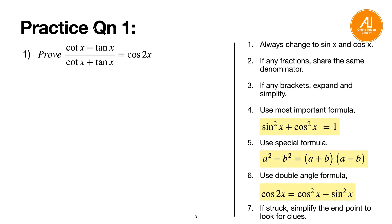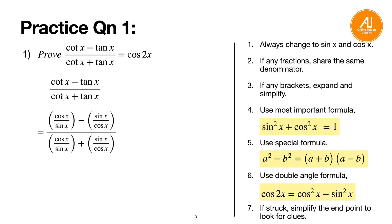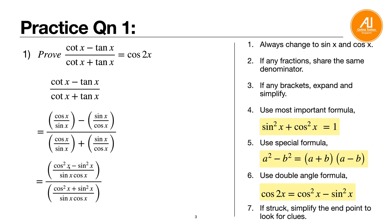Question one: prove (cotangent x minus tangent x) over (cotangent x plus tangent x) equals cosine 2x. Copy the left-hand side. First rule: change everything to sine and cosine. Cotangent is cosine over sine, tangent is sine over cosine. Now make all fractions share the same denominator by cross-multiplying, giving you cosine squared x minus sine squared x over sine cosine in the numerator, and cosine squared plus sine squared over sine cosine in the denominator.